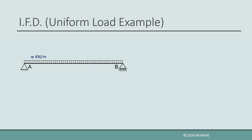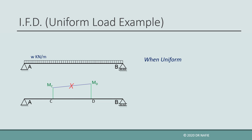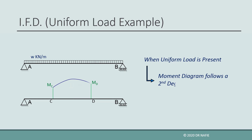If a beam is loaded with a uniform load and we calculate the internal moments at two points on the beam, we cannot obtain the diagram by just connecting the two values using a straight line. The existence of the uniform load will cause the bending moment diagram between these two points to be a second-degree curve, a parabola.